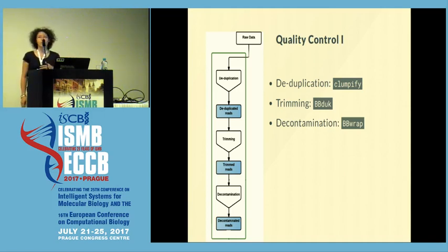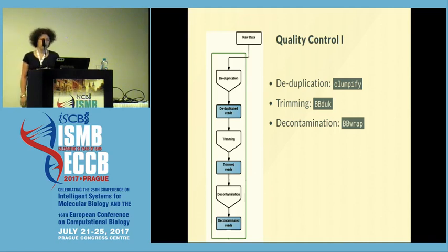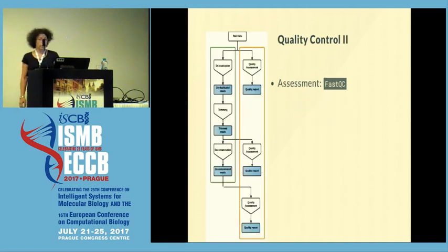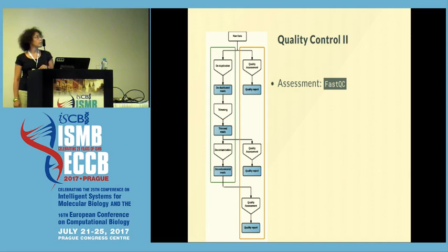All the quality control is performed with tools that belong to the BBMap suite: Clumpify for deduplication, BBDuk for trimming, and BBMap for decontamination. The actual quality control is also accompanied by several steps of quality visualization and assessment, all carried out with FastQC.